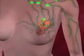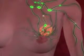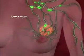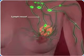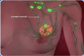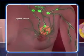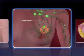Cancer cells from invasive breast cancer are most commonly spread to other parts of the body through the lymph channels to the lymph nodes under the arm. Once the cancer cells reach these lymph nodes, they continue to grow and cause the nodes to swell.